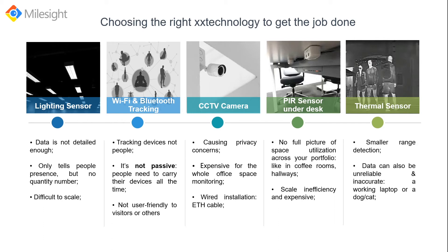The thermal sensor's signal can be blocked by furniture, and its range is much smaller than other technologies. The biggest issue is that detection data can be unreliable and inaccurate. If there are a lot of thermal activities — like a dog, a cat, or a working laptop — thermal sensors may confuse these activities as a person. That covers the most popular technologies for occupancy detection in the market.